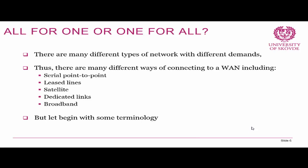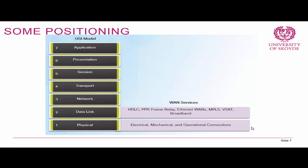Can we say there is one single way of connecting to the wide-area network? Unfortunately, no. There are many different types of networks with very different demands — some that are fine with just an internet connection, and others that require their own wide-area network. There are serial point-to-point links, leased lines, satellite technologies, dedicated links where you lease a link from a service provider, or simply a broadband connection. What we will discuss majorly in this course are WAN services on the data link and physical layers, including protocols such as HDLC, PPP, frame relay, MPLS, broadband solutions, and physical layer aspects like electrical, mechanical, and radio frequency connections.